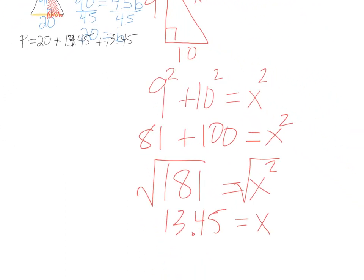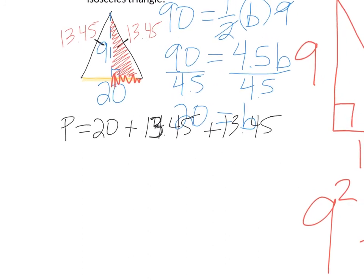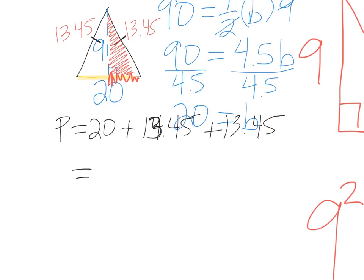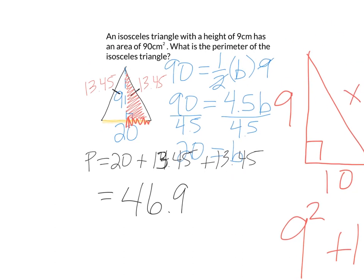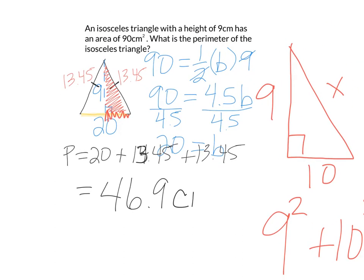So that gives me a grand total of 46.9. And the units are centimeters. So that's the perimeter of this triangle.